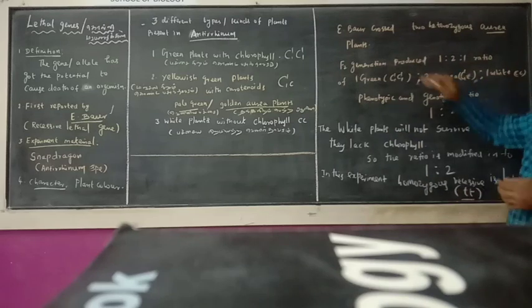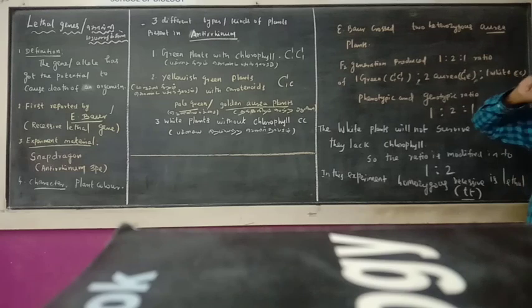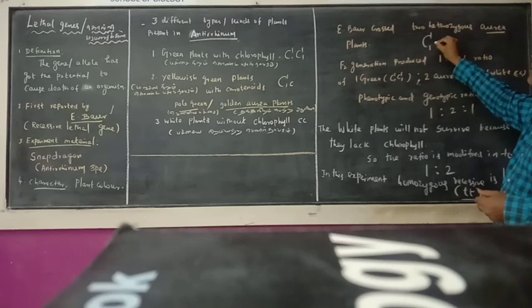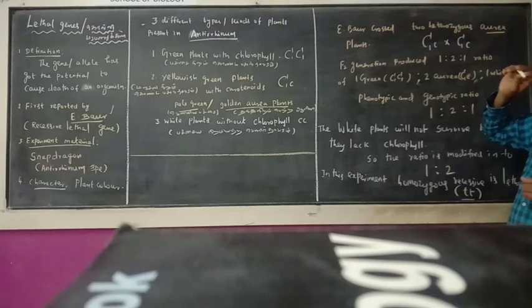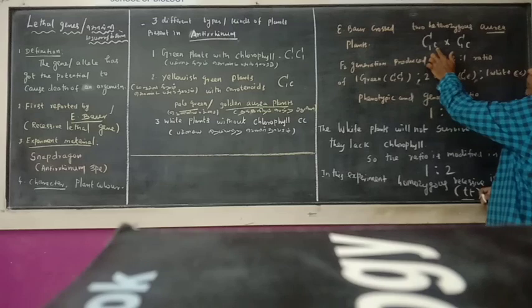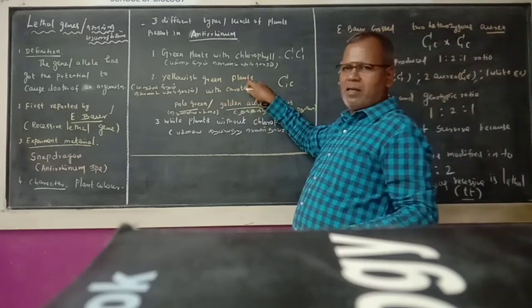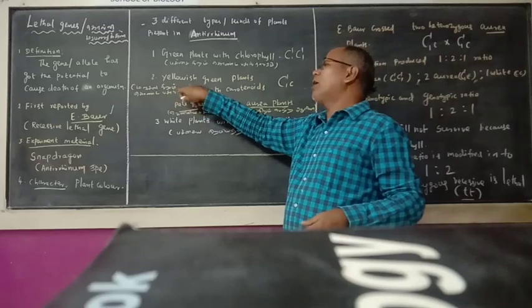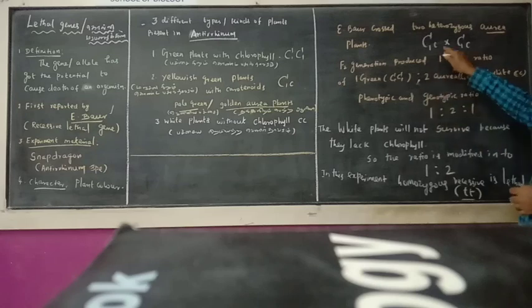Now we will cross two heterozygous aureo plants - capital C small c crossed with capital C small c. Aureo means heterozygous condition, one dominant and one recessive gene is present, it represents yellowish green plants.